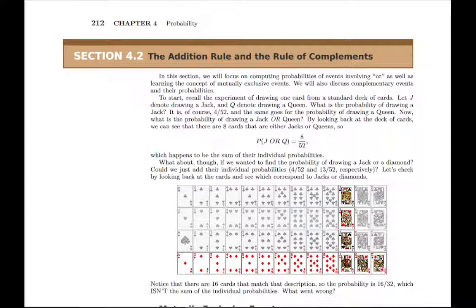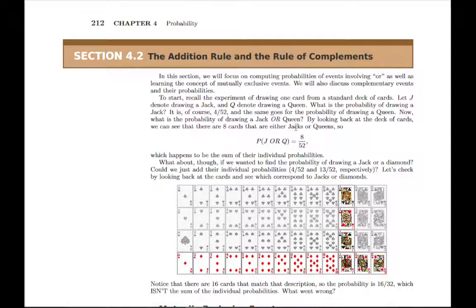There's an example here at the beginning where we look at a deck of cards and we ask: what would the probability of drawing a jack or a queen be? As you can count up, there are four jacks and there are four queens, which means there are eight cards that are either jacks or queens. So the total probability of drawing one of them is 8 out of 52. The probability of drawing a jack is 4 out of 52 and a queen is the same thing, and if you add them together, you get 8 out of 52.